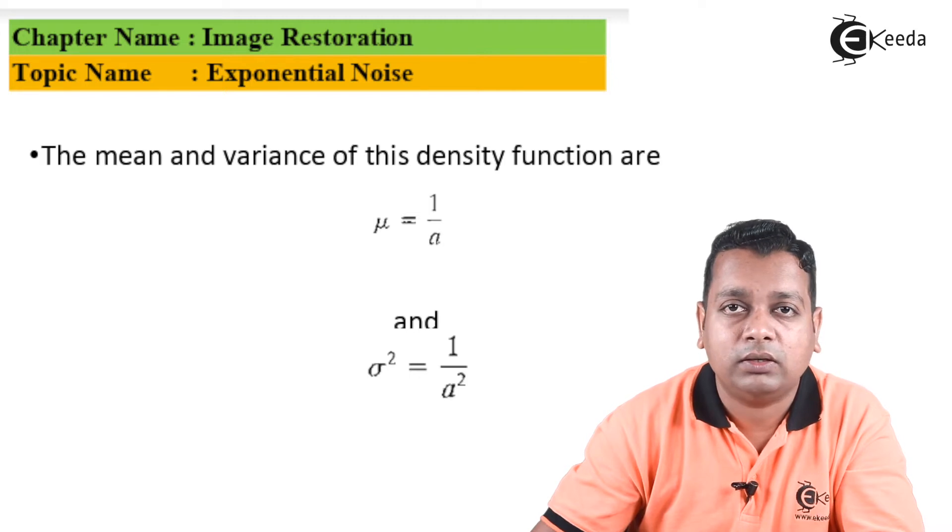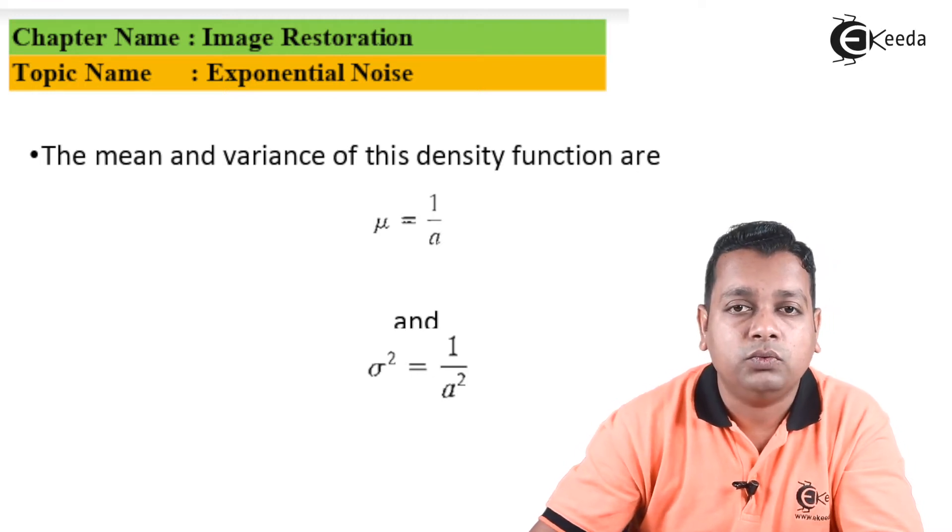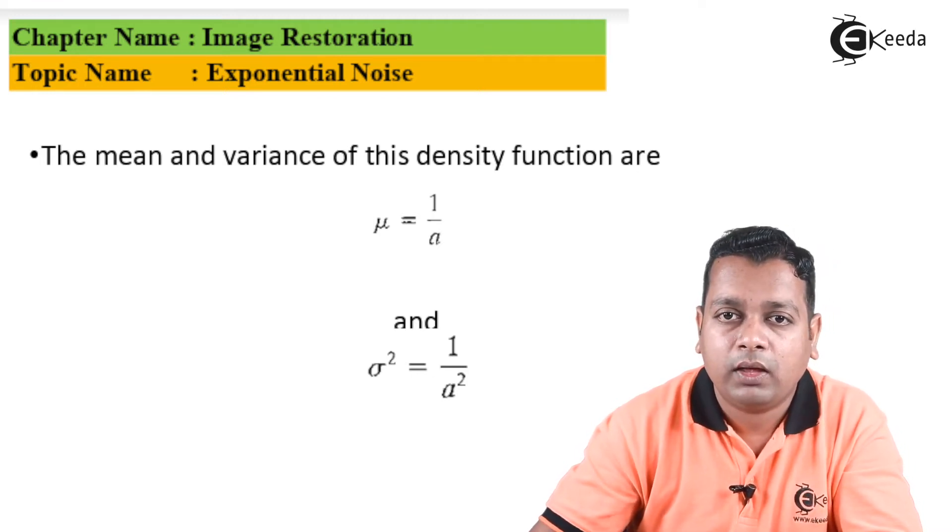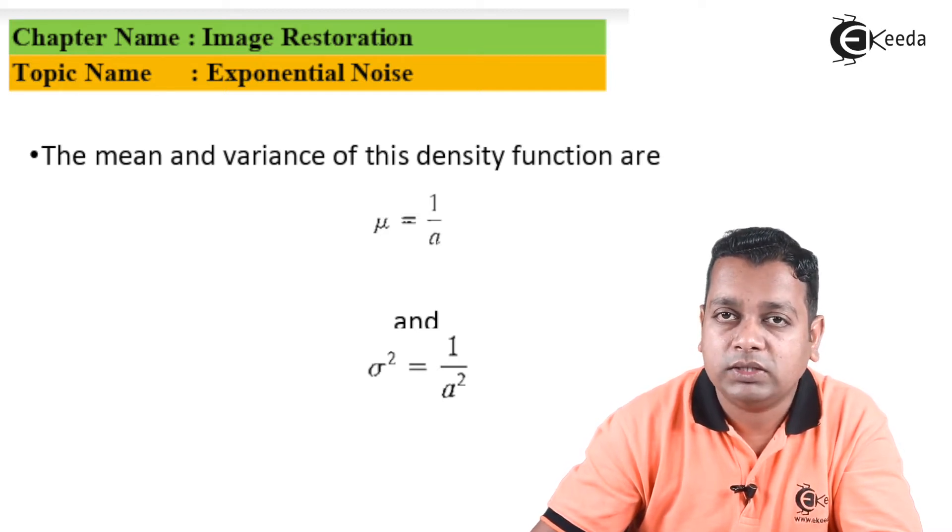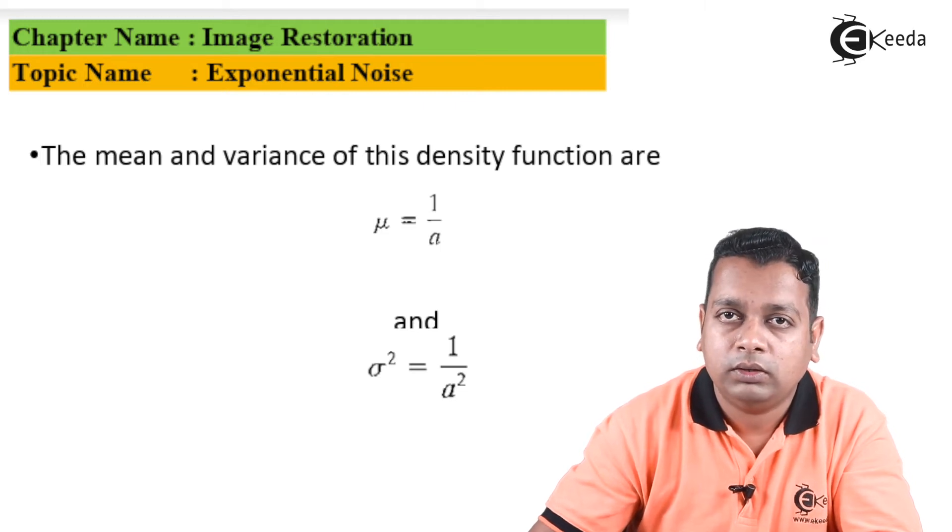The mean and variance are two other computed parameters with the help of the basic parameters. We can see here the formulation: mu given by 1 upon a, and the variance sigma square given by 1 upon a square. We always denote mean of the function by mu and the variance by sigma square.